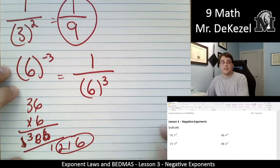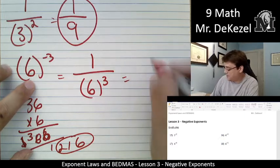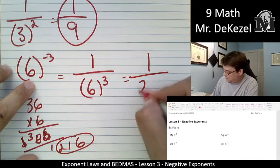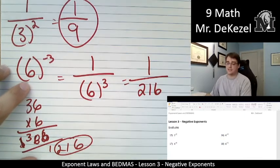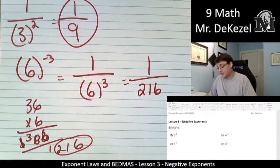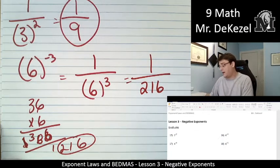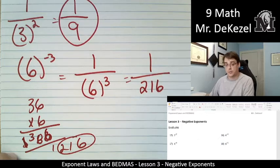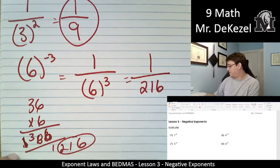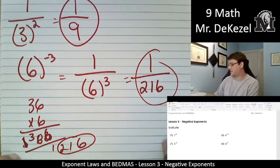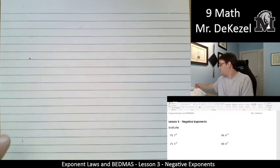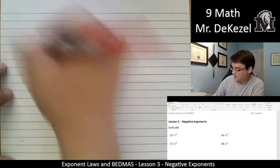Yes, 216. Just wanted to confirm again for myself. So that makes this answer 1 over 216. We're working with large numbers, and sometimes we've got to double-check our math and work through the problems on our own. Sorry about that. There's our answer for 6 to the power of negative 3. We take the reciprocal. Next one.